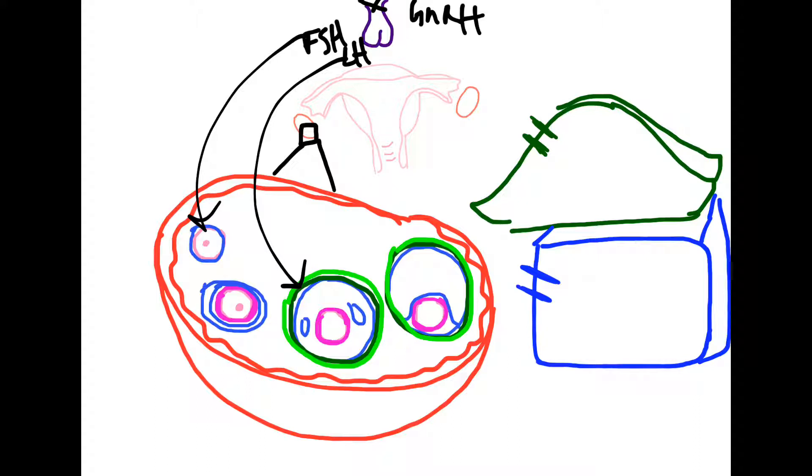Each molecule comes in, so LH will bind here. Remember, this green cell is the theca interna cell. LH will bind to the LH receptor in the theca interna cells and this causes cholesterol to change into androstenedione by the enzyme desmolase.